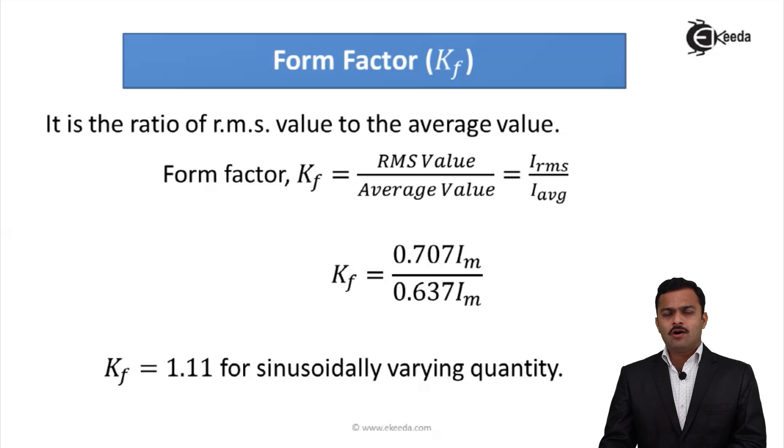It is the ratio of RMS value to the average value. Form factor Kf is given as RMS voltage, or RMS value of AC quantity, divided by average value. So Kf = I_RMS / I_average.